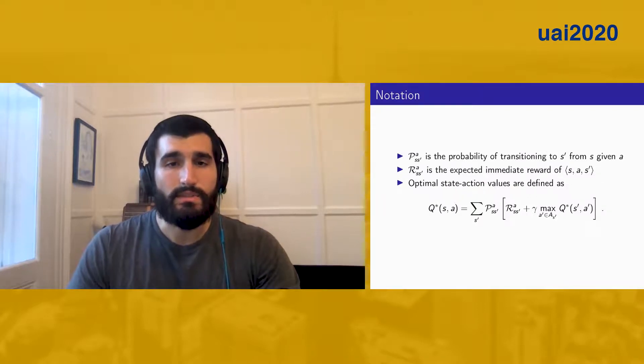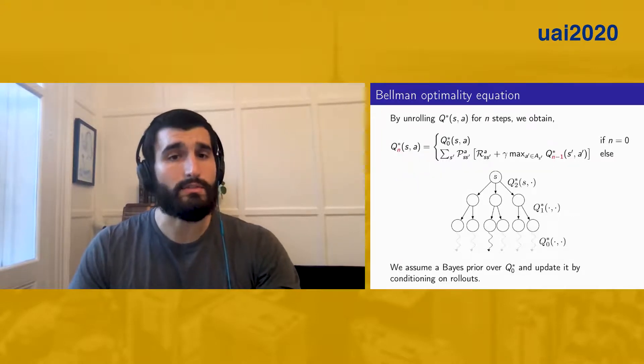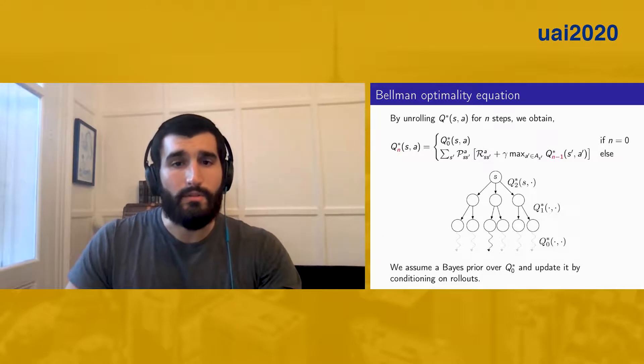We adopt the notation from Sutton and Barto, and optimal state action values can be defined recursively through the Bellman optimality equation, and we can unroll this equation. If you were to unroll this for two steps, our graph would look like this.